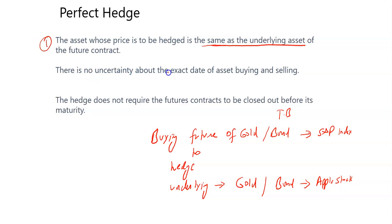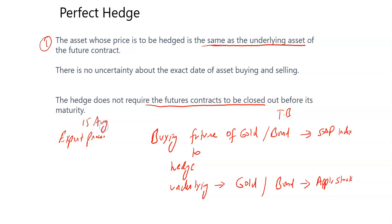The second requirement is that there is no uncertainty about the exact date of buying and selling the asset. For example, if you want to hedge your export proceeds, you should know the exact date of those proceeds to create a perfect hedge. Third, the hedge should not require the future contract to be closed out before its maturity. For example, if you are receiving export proceeds on 15th August but you bought a futures contract expiring 30th September, you have to close the future before maturity and your hedge will not be perfect — you may face basis risk.